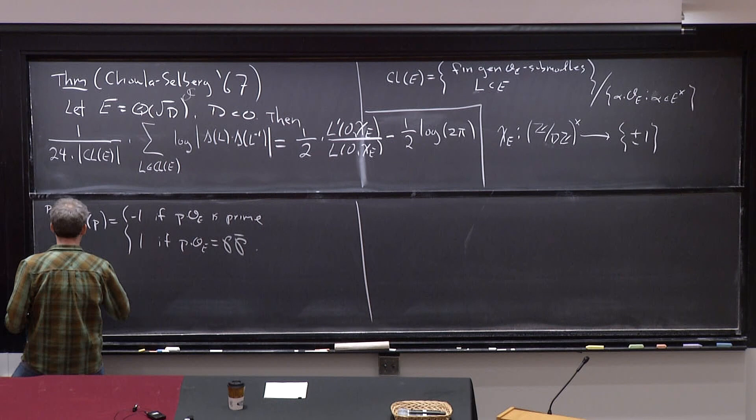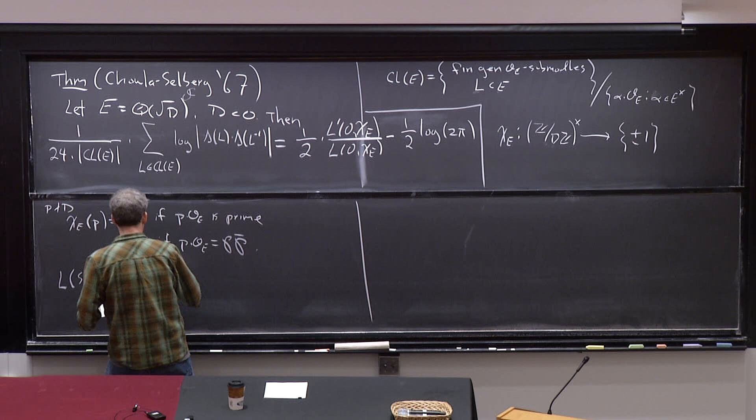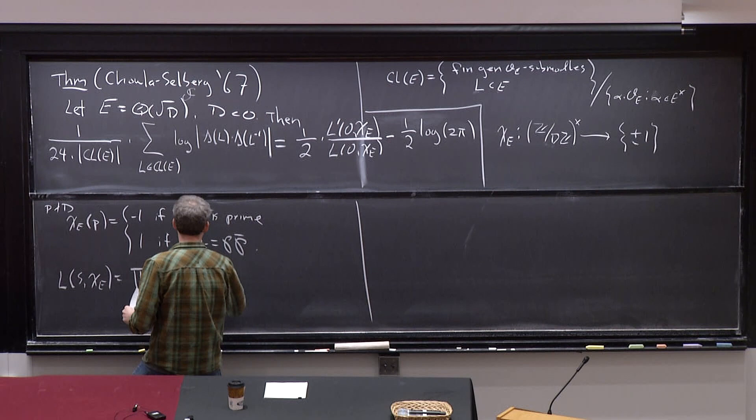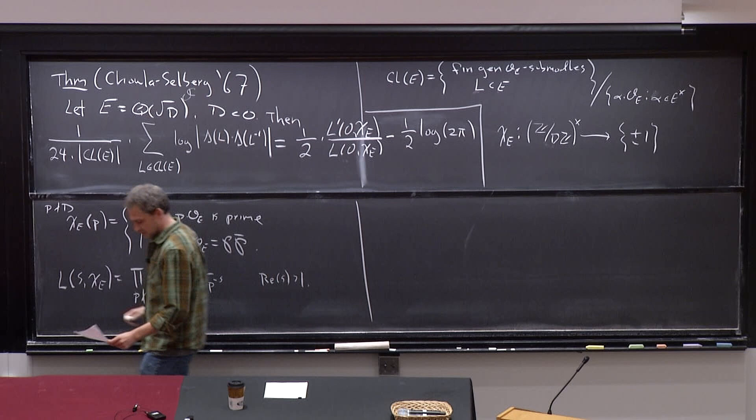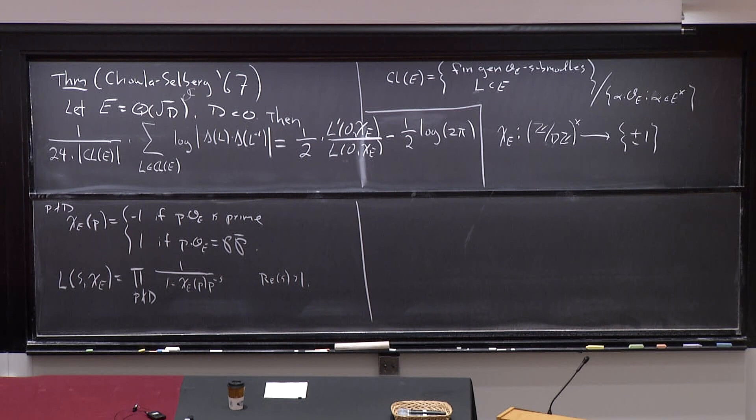The L-function is Dirichlet's L-function: L(s, chi_E) is the product over all primes p not dividing d of 1 over (1 minus chi_E(p) p^{-s}), which converges when the real part of s is greater than 1 and has holomorphic continuation. So it makes sense to talk about L' over L, and it's non-vanishing at s equals 0. This is the first statement of the Chowla-Selberg formula.